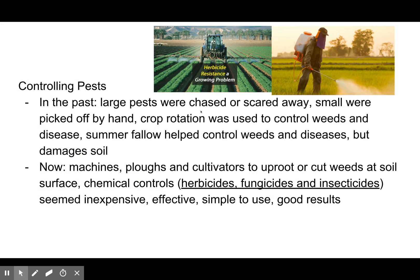Controlling pests: in the past, large pests were chased or scared away, small ones were picked off by hand, and crop rotation was used to control weeds and disease. Summer fallows helped control weeds and disease but damaged the soil. Now machines, plows, and cultivators are used to uproot or cut weeds at the soil surface.